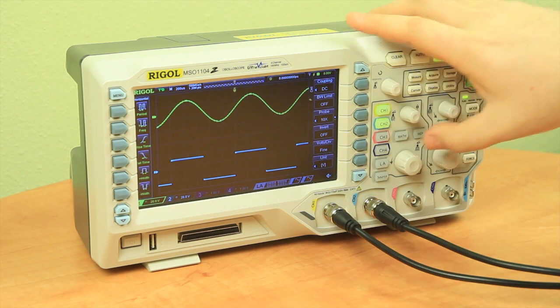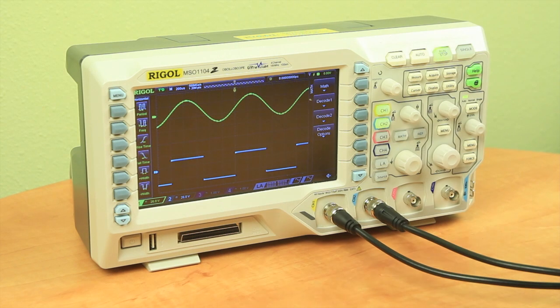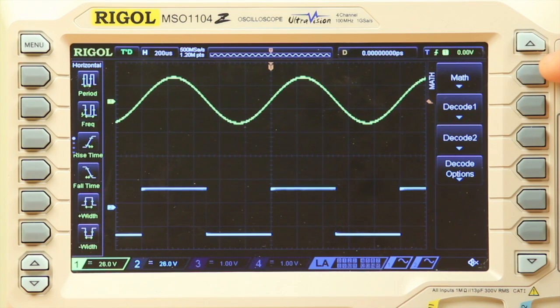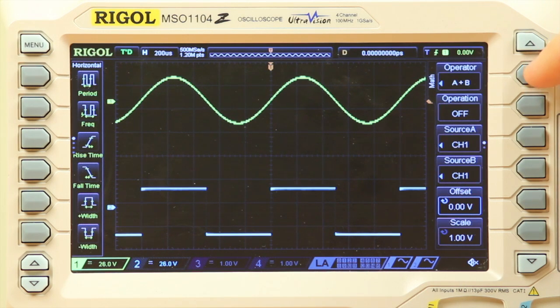From here on the scope itself, I'm going to hit the math button, and then I have to hit math again. But as a side note, this is where you'll actually find your serial decode options. So I'm going to hit math again, and now we have a whole bunch of different things we can choose from.